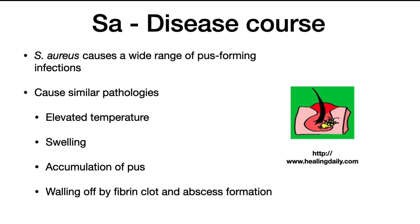Let's talk a little bit about the disease course. S. aureus causes a wide range of pus-forming infections, including superficial boils and styes, tissue infections, pneumonia, meningitis, urinary tract infections, and deep-seated infections. These all cause similar pathologies: elevated temperature, swelling, and accumulation of pus, and then the immune system will wall it off in a fibrin clot and form an abscess.